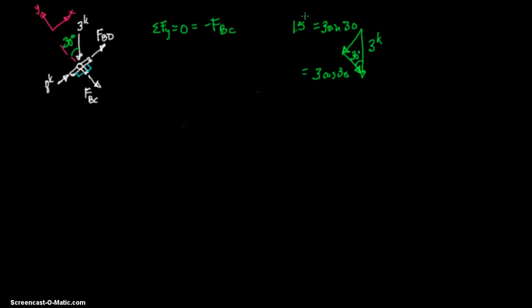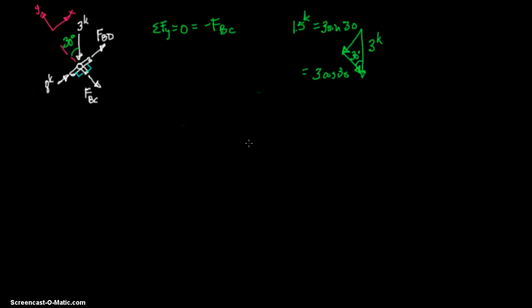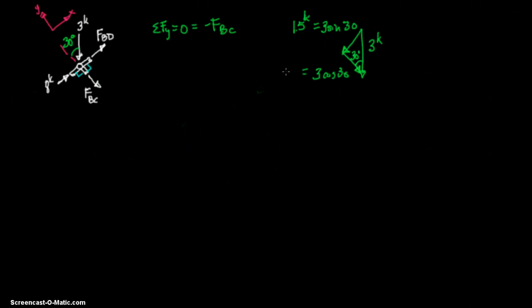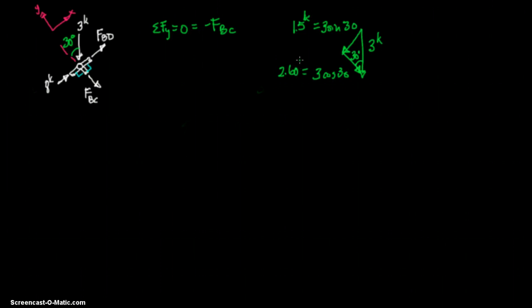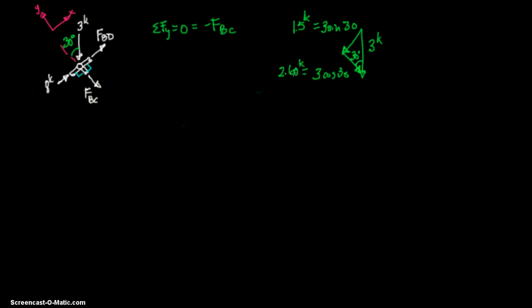And since we know those, we're just going to solve for them, as opposed to leaving them as 3 sine 30 and 3 cosine 30. 3 sine 30 is 1.5, and that's kips, which is 1,000 pounds. I'm pretty sure I've mentioned that before. Then 3 cosine 30 is, let's say 2.6. It's not 2.60 exactly, but we're going to say 2.60 rounded.